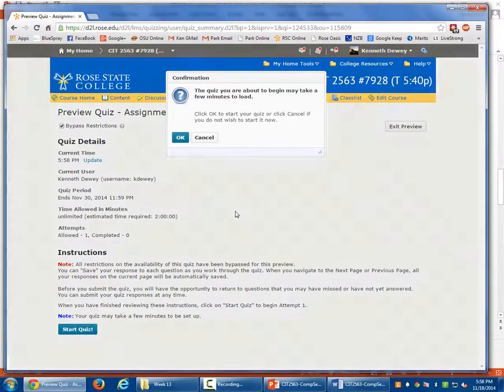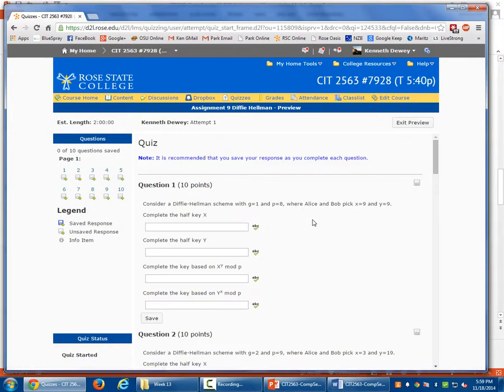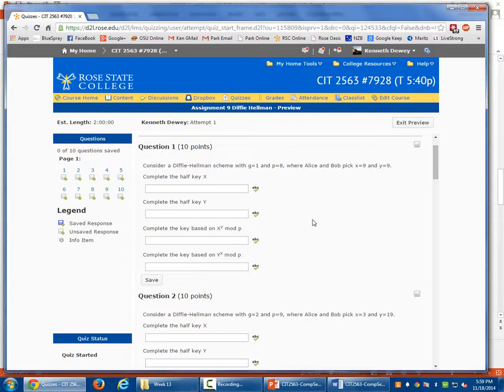This is the actual Diffie-Hellman homework. Here's how you're going to answer. You're going to compute the half key and then compute the key based on the half key. And when you do it, just put the answer in there. Don't put 'half key is two.' Just put two. Or don't go in here and put X equals nine. Don't do that. Just put in nine. That makes it much better that way.